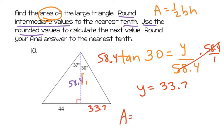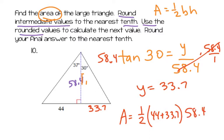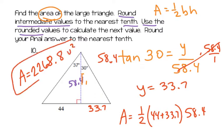I'm not done because my goal was to find the area of the triangle. Now I have enough information — the area is one-half times base times height. The base is going to be 44 plus 33.7, and the height is 58.4. Put that in your calculator using 0.5, and make sure you've got parentheses around your sum. The area equals 2268.84 — rounding the final answer to the nearest tenth, that's 2268.8 units squared. That's my final answer.